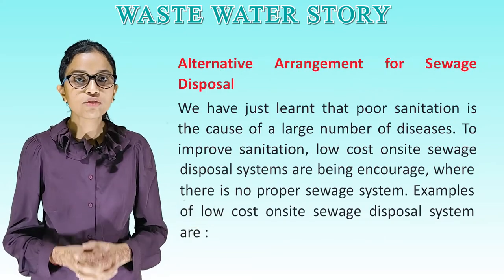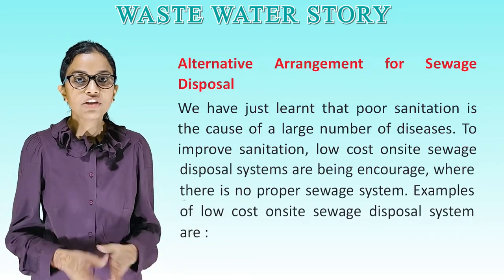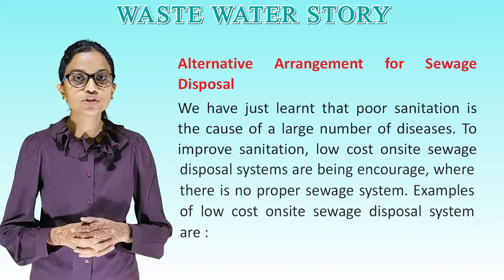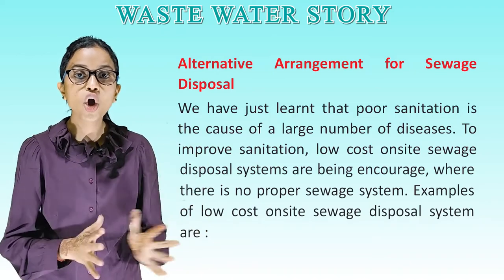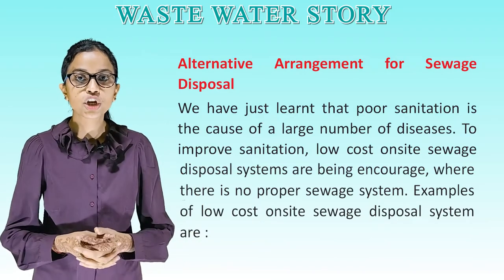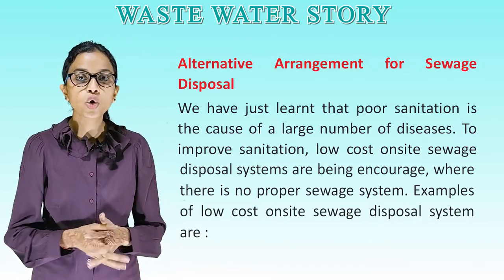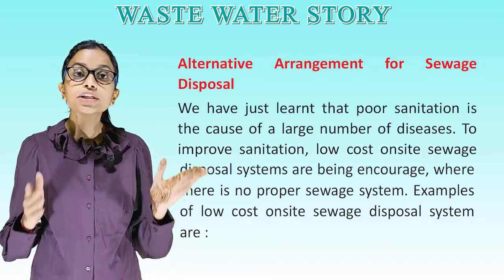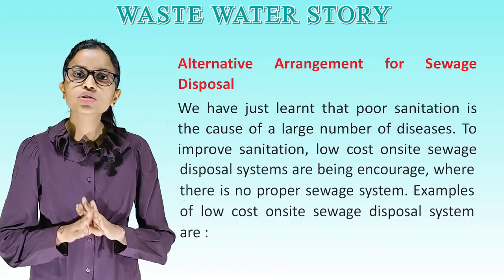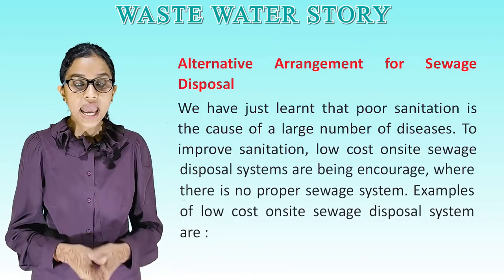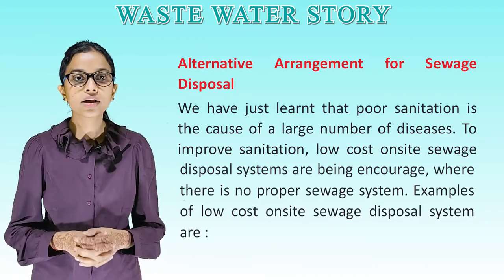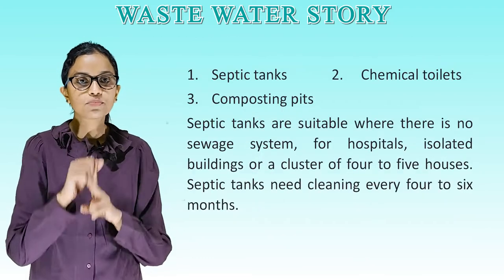Alternative arrangements for sewage disposal: poor sanitation is the cause of a large number of diseases. To improve sanitation, low-cost on-site sewage disposal systems are being encouraged where there is no proper sewage system. Examples of such systems include septic tanks, chemical toilets, and composting pits.